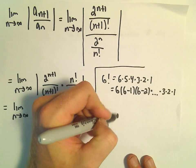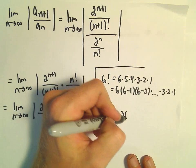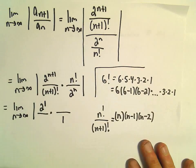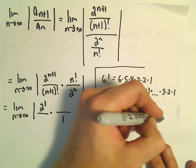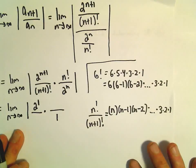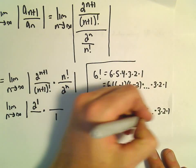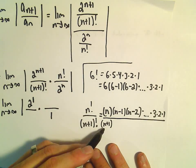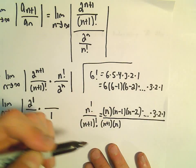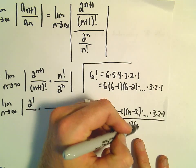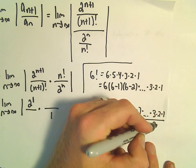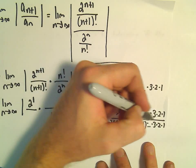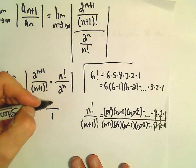So n factorial, I'm going to write as n(n-1)(n-2)...3×2×1. The same thing in the denominator. If we expand (n+1)!, we'll get (n+1)×n×(n-1)×(n-2)...3×2×1. Notice everything's going to cancel out except for the (n+1) in the denominator.